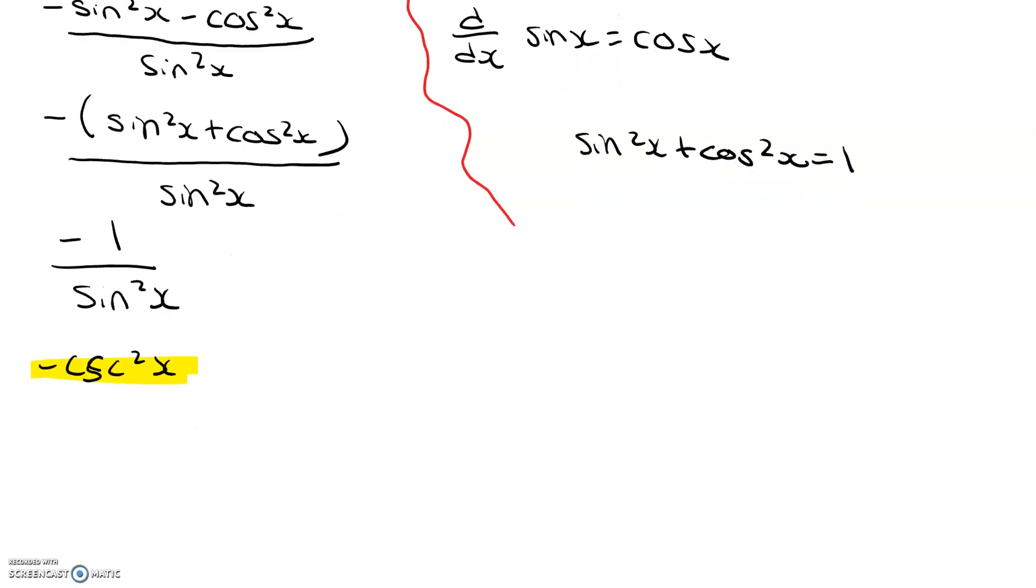So, through all that process, we discovered that the derivative of cotangent x is equal to negative cosecant squared x. And that is that.